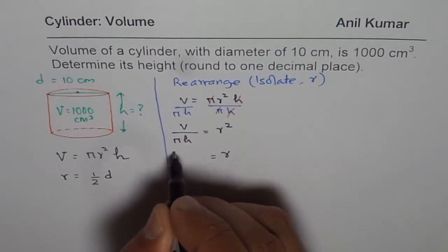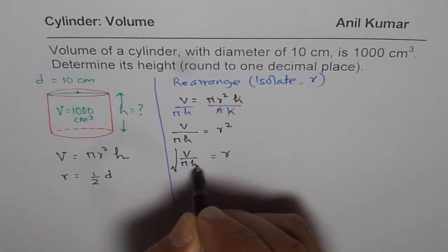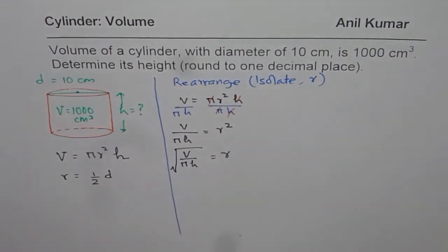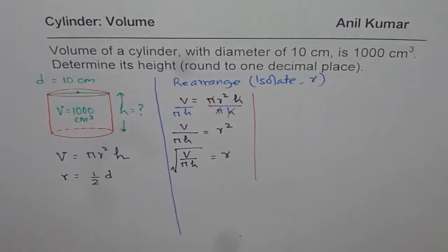So we can square root. So r will be square root of V/(πh). So that is how you can find radius. But in fact, we wanted to find height. So let us redo this. I did a mistake here.